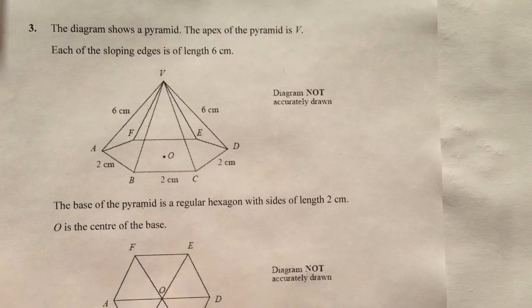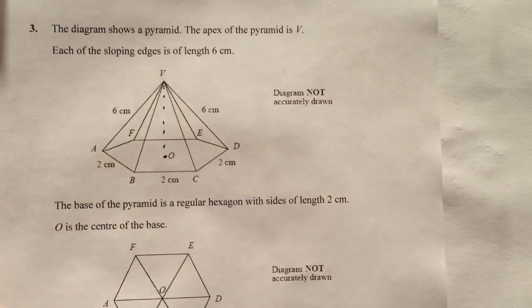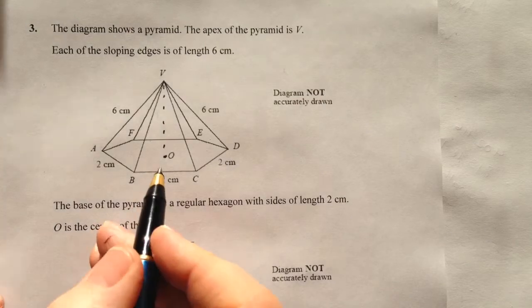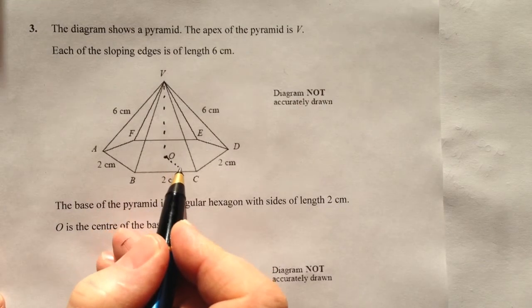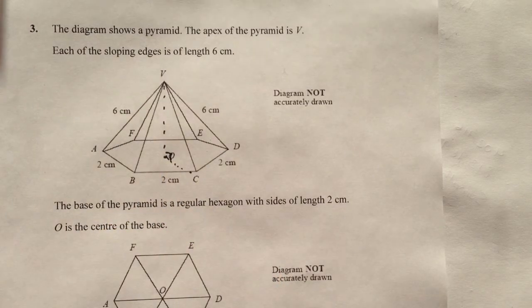What they're wanting us to do is to work out this dimension which is VO. Now hopefully you can see that VO is the height of this particular pyramid and if I draw a line from O to C then effectively that's a right angle triangle.